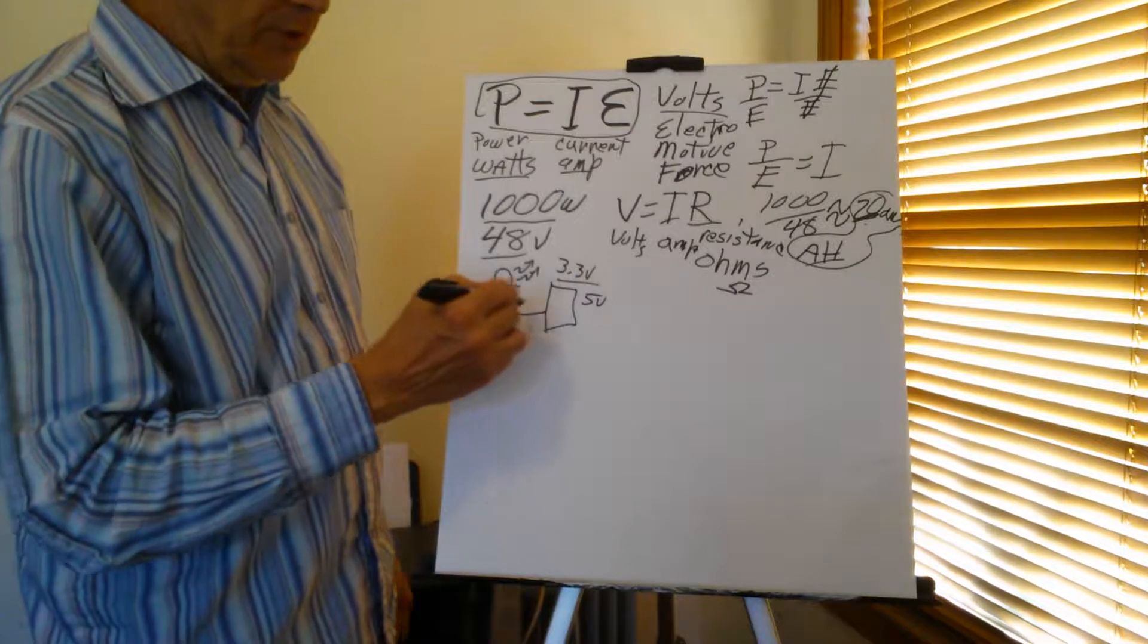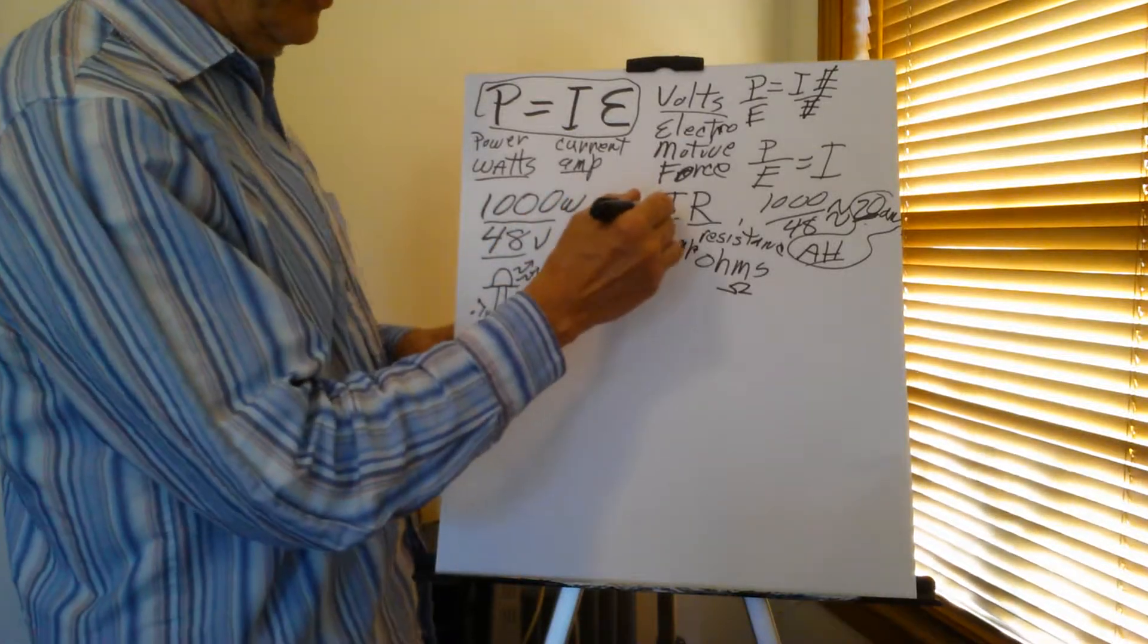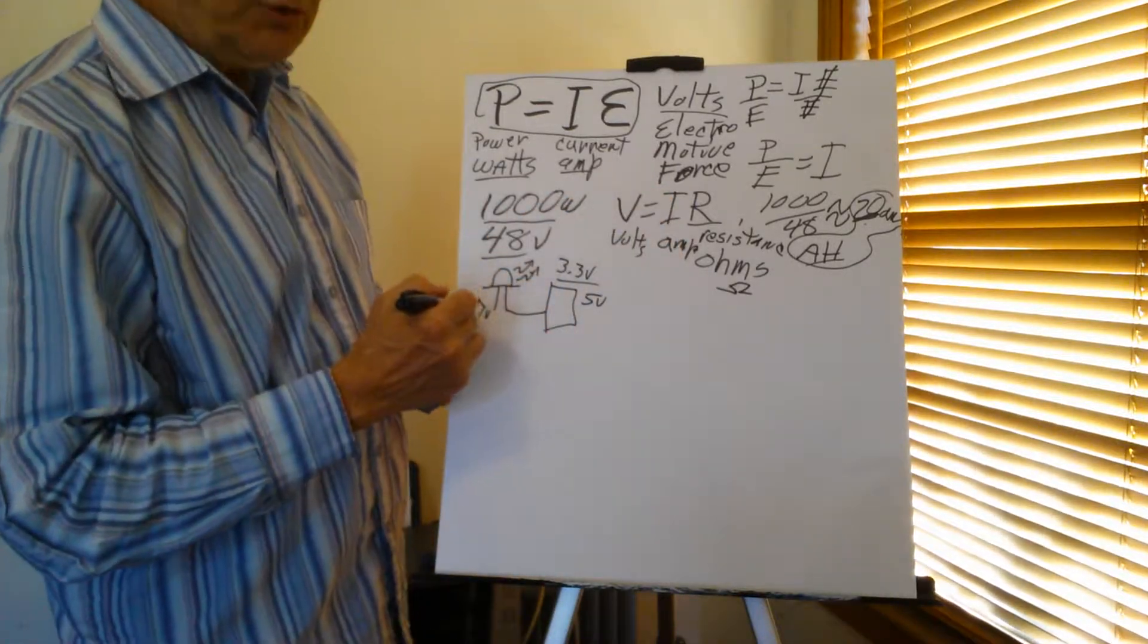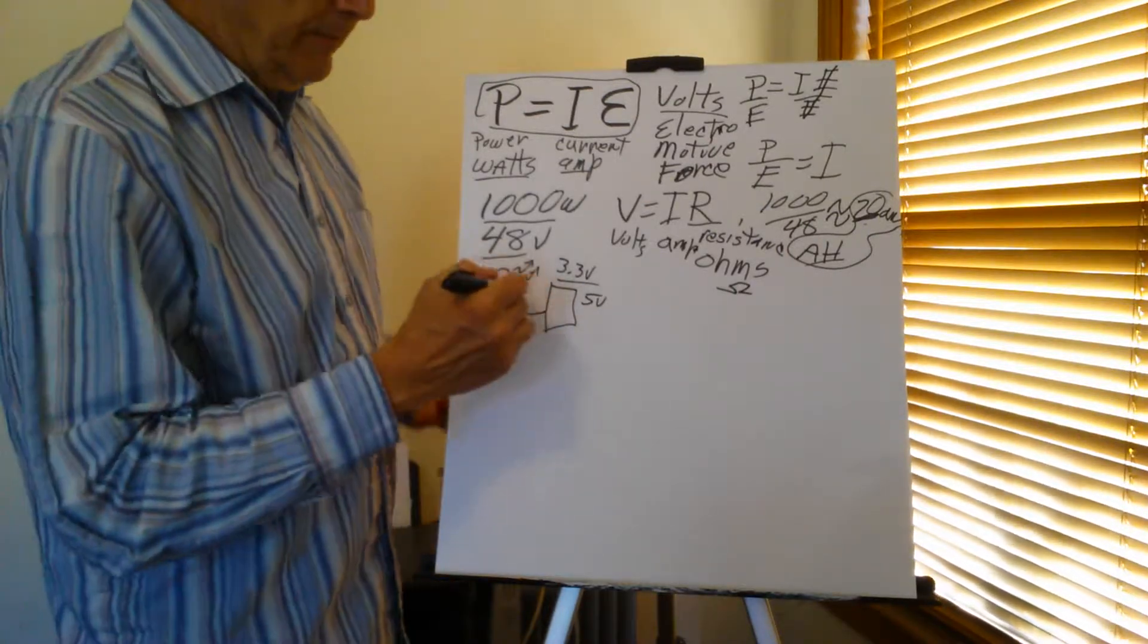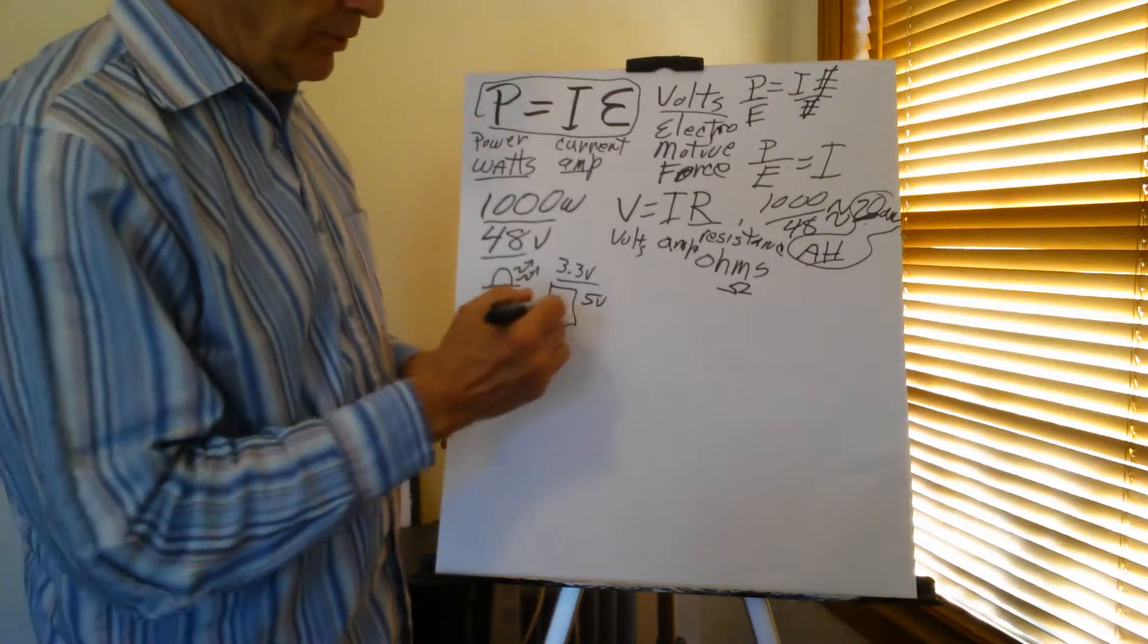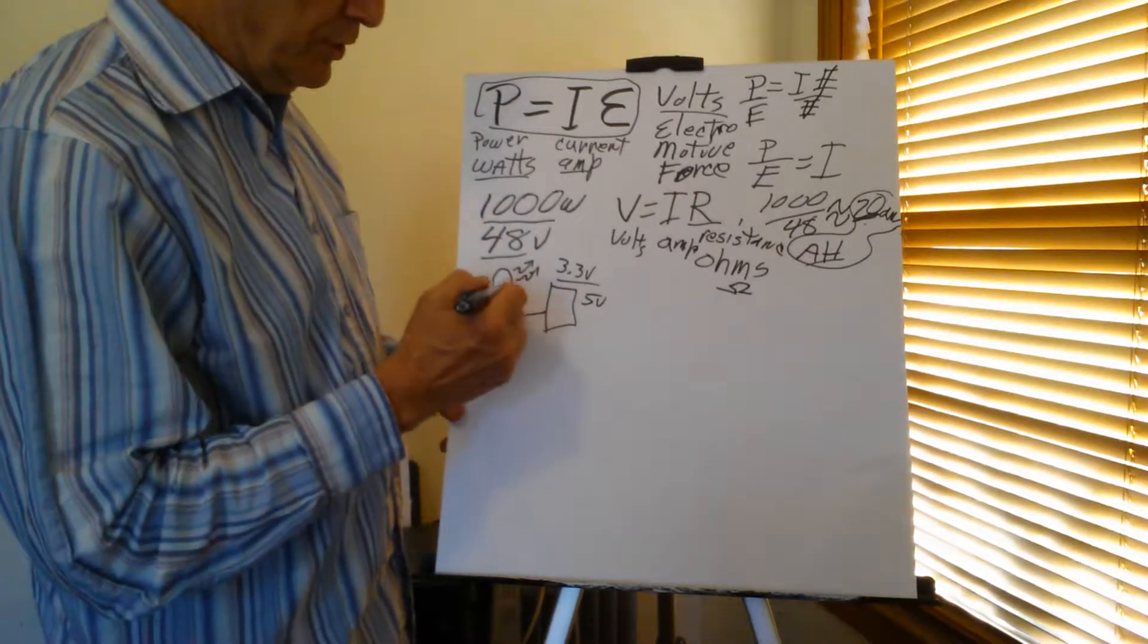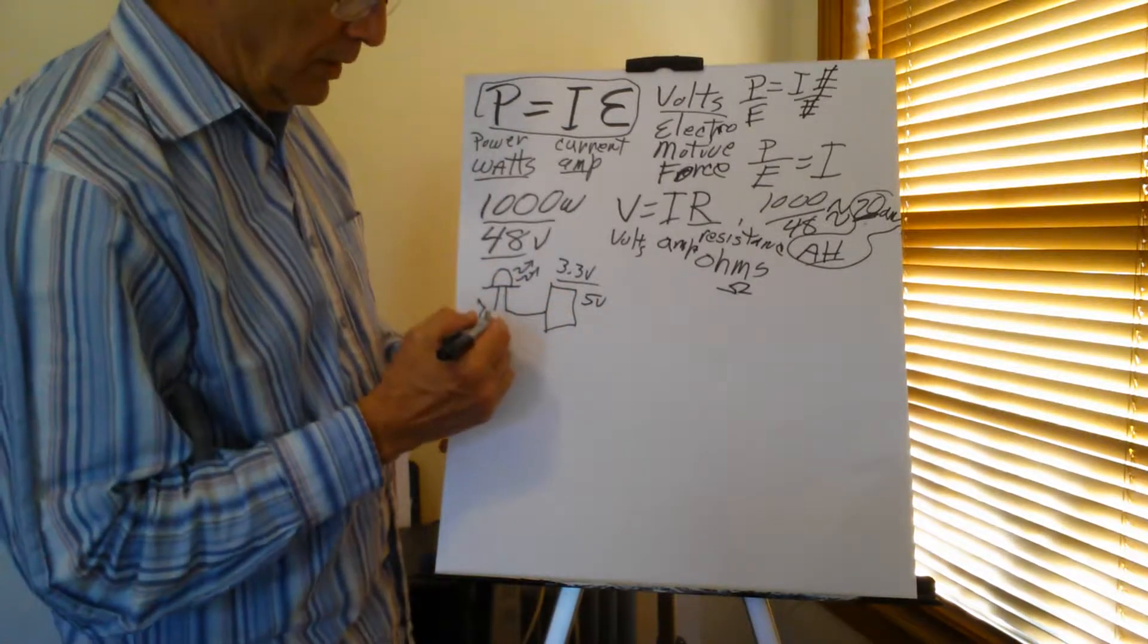This thing wants to run 0.7 volts, not 7 volts. So it's going to suck enough current out of there to run its little self. And you're going to burn something up. Either your microprocessor is going to smoke or the LED is going to smoke. One or the other.